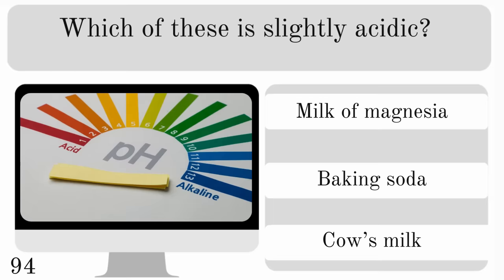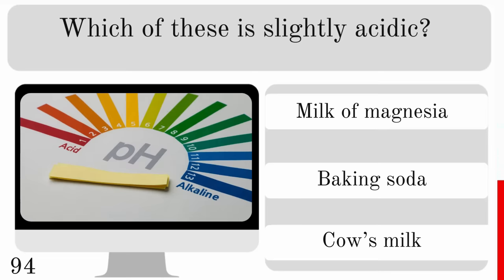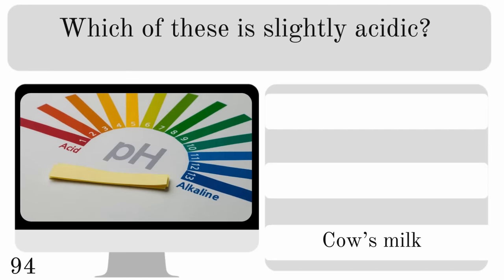Which of these is slightly acidic? Milk of magnesia, baking soda or cow's milk? The one that's slightly acidic is cow's milk.